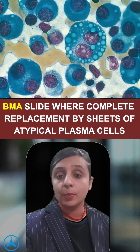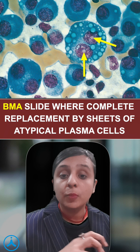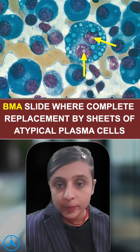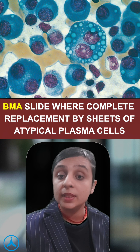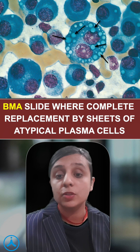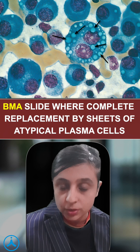These abnormal plasma cells are showing multiple prominent abnormal nucleoli at places along with deposition of abnormal cytoplasmic immunoglobulin.